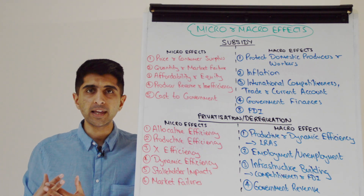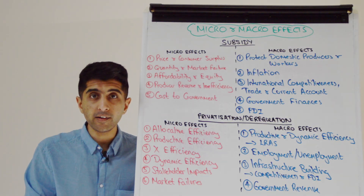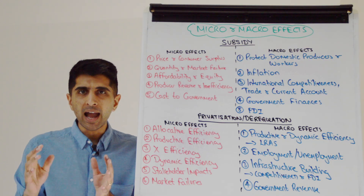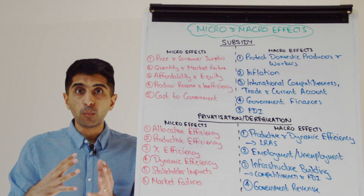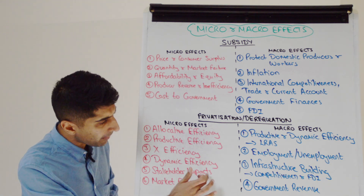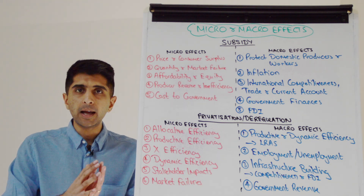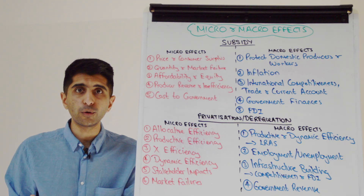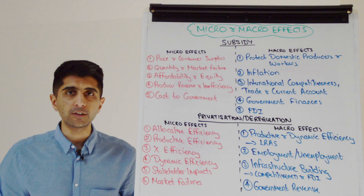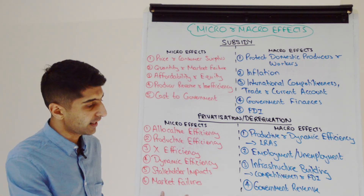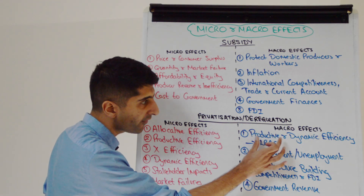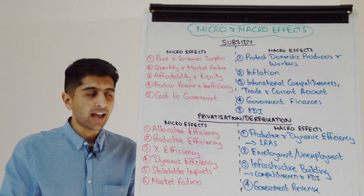Looking at deregulation specifically — where are the laws being relaxed? Is it in the labour market with hiring and firing laws, health and safety laws, or maternity and paternity leave? Workers' welfare may be harmed as a result. We can also talk about market failures: if deregulation involves relaxing environmental standards, we could worsen environmental market failures. Private firms coming in may ignore externalities and therefore potentially worsen market failures.